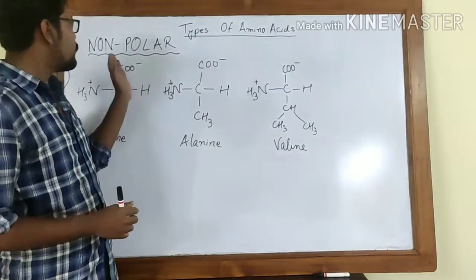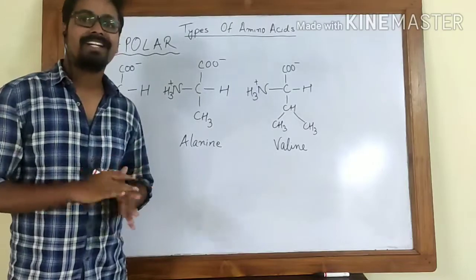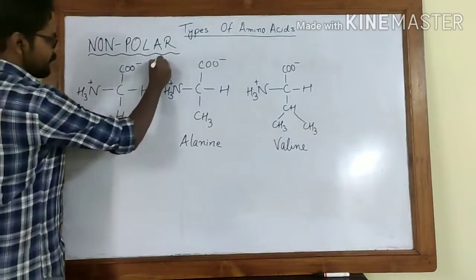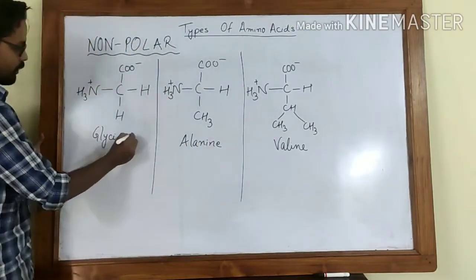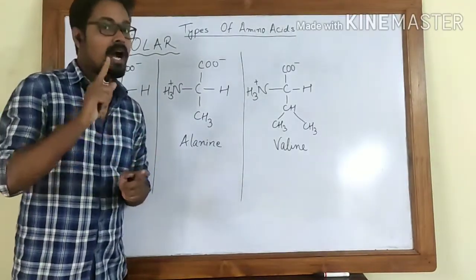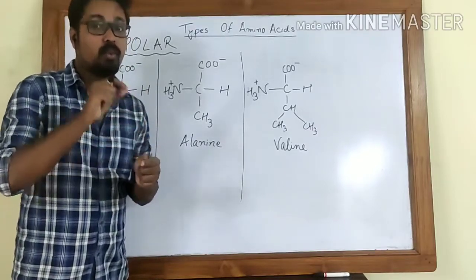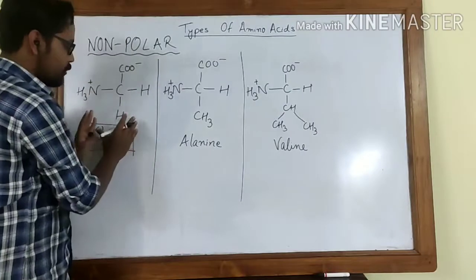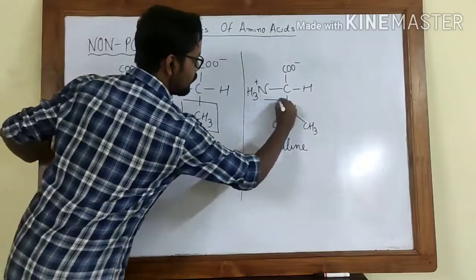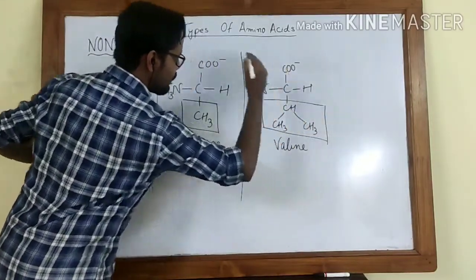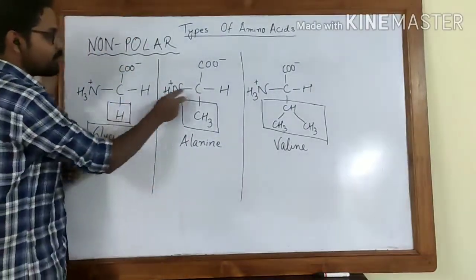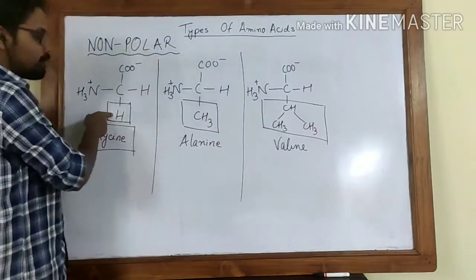In total there are nine non-polar amino acids. The first one is glycine. As we know, the structure of amino acids contains one R group, and the difference in the R group tells us which amino acid it is. In the case of glycine, the R group is also a hydrogen atom — just like the one hydrogen already present in all amino acids.